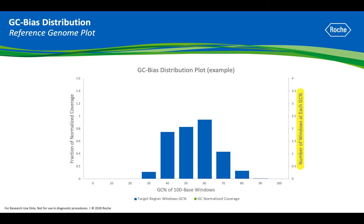This plot represents what an actual GC distribution for a typical reference genome might look like. The secondary y-axis on the right shows the amount of GC content in each window. In this reference genome, most of the regions contain 40% to 60% GC, meaning that this genome has a fairly even GC distribution.